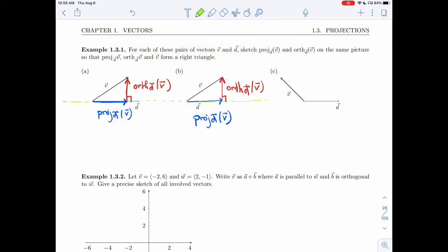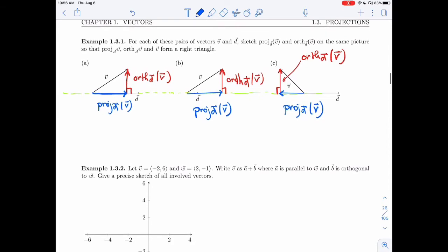And then in the third example, the angle between V and D is obtuse. But again, we only care about this direction. So we'll start at the tip of V and bring a perpendicular down. So this part here is going to be the orthogonal component of V perpendicular to D, and this part is going to be the projection. And again, you have a right triangle and V is the sum of the two blue and red vectors.